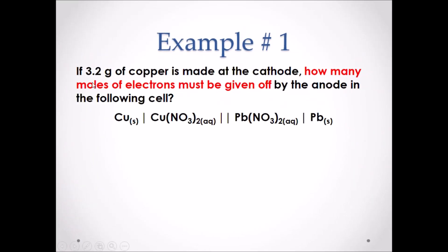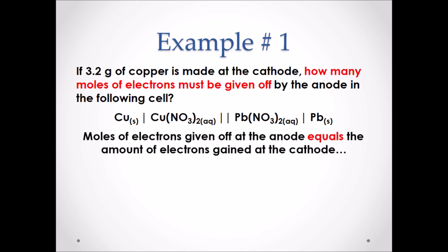Example number one: if 3.2 grams of copper is made at the cathode, how many moles of electrons must be given off by the anode in the following cell? Pause the video and attempt this example. The amount of electrons given off by the anode equals the amount of electrons gained at the cathode, and we know copper is the cathode which is going through reduction.